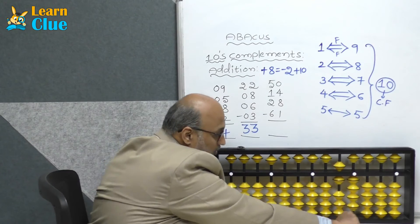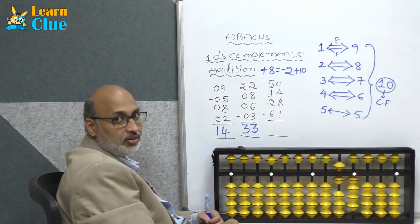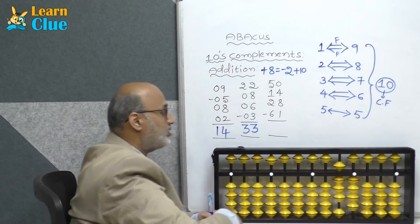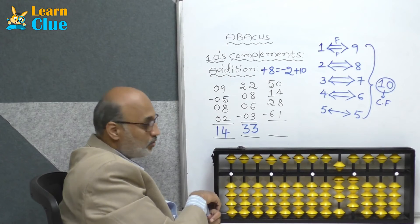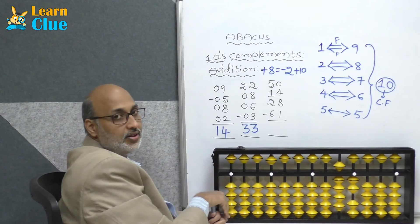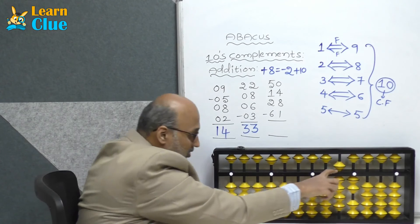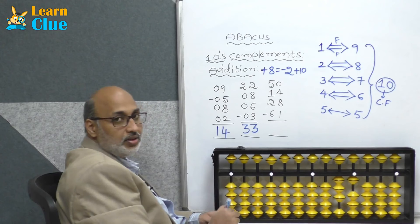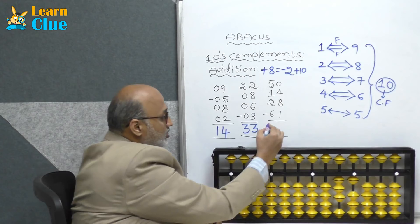Next problem: 50. Plus 14 — plus 10 plus 4. Plus 28 — plus 20 plus 8. We can't do 8 directly, so who is the friend of 8? 2. So minus 2 plus 10. Now they are asking minus 61 — minus 60 minus 1. The problem is finished.